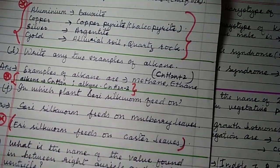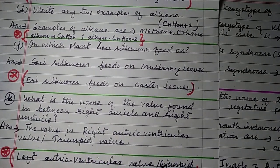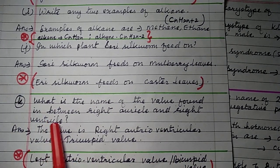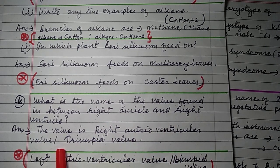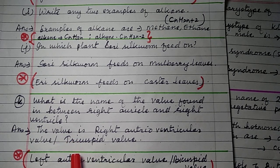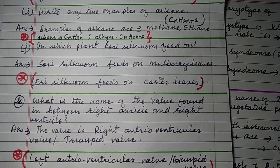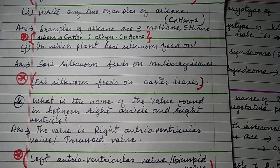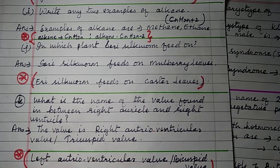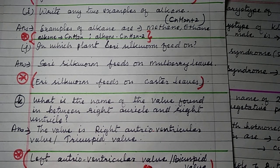Question 1K: What is the name of the valve found between the right auricle and right ventricle? The valve is called the right atrioventricular valve, also known as the tricuspid valve. A similar question: the valve between the left auricle and left ventricle is the left atrioventricular valve or bicuspid valve. Left side — bicuspid; right side — tricuspid.